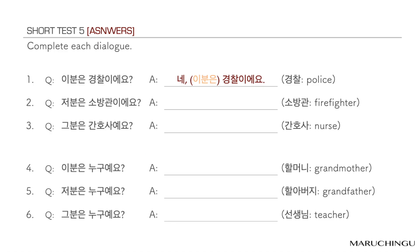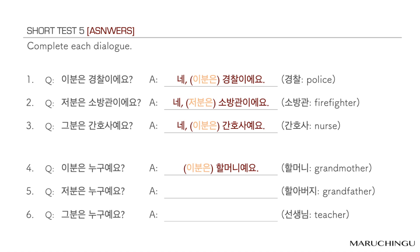1번: 이분은 경찰이에요? — 네, 경찰이에요. 2번: 저분은 소방관이에요? — 네, 소방관이에요. 3번: 그분은 간호사예요? — 네, 간호사예요. 4번: 이분은 누구예요? — 할머니예요. 5번: 저분은 누구예요? — 할아버지예요. 6번: 그분은 누구예요? — 선생님이에요.